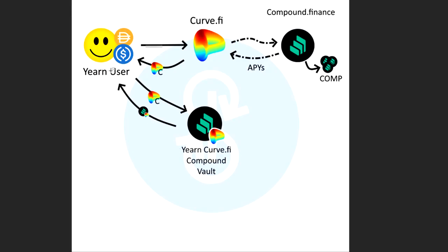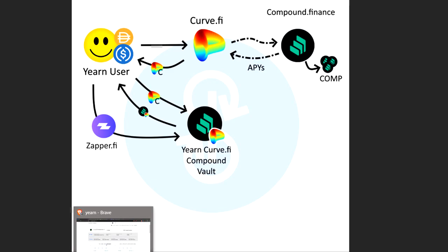So you've got your vault key back and now the Curve vault knows that it owes you a proportion of its holdings. Now, before I mention what the Curve vault is going to do — remember that Zapper Finance doesn't actually have a way to get in here straight without doing all this manual stuff, but I'm almost 100% sure they're going to have it soon because they do for all the Yearn Finance vaults.